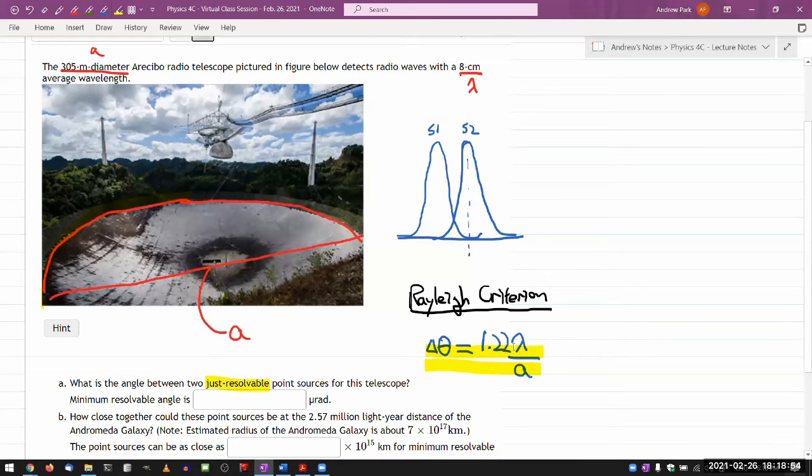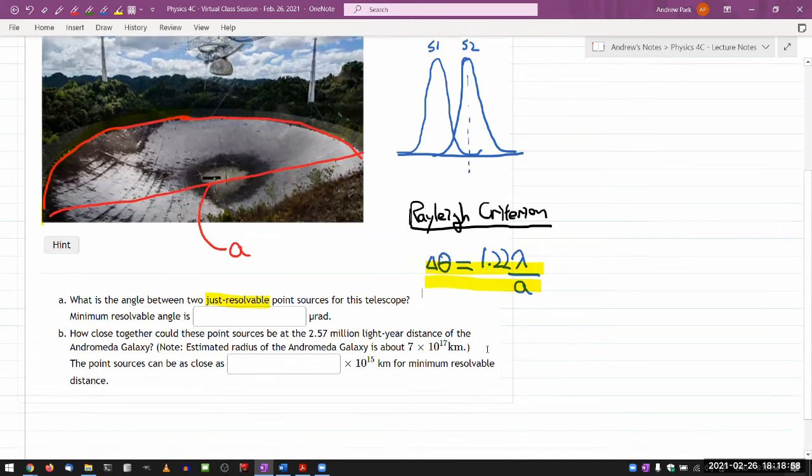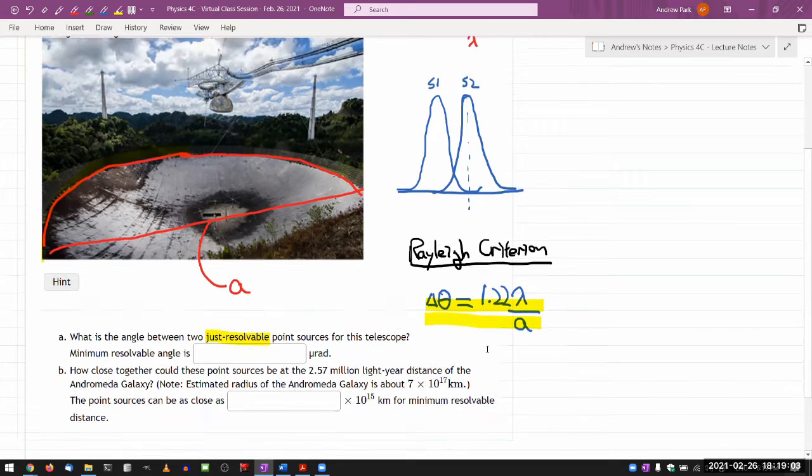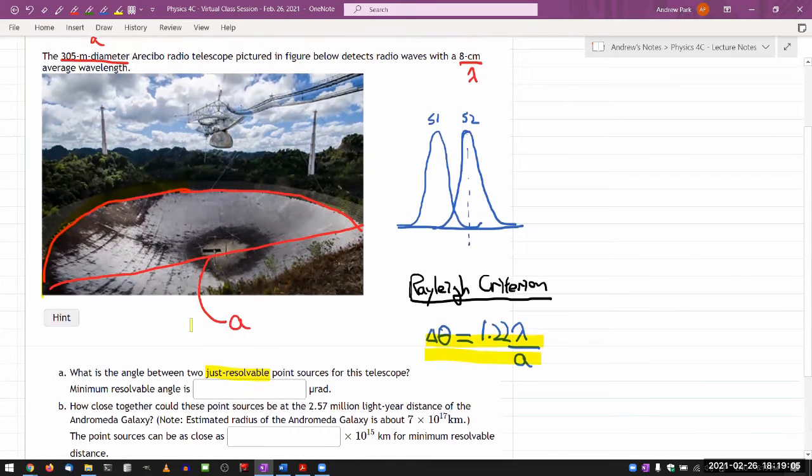At the end of the day, it's a criteria you just remember, memorize, know where to look up. So in terms of getting the answer here, the minimum resolvable angle, you are looking for answer in microradians. So really, all you have to do is work out 1.22 times the wavelength divided by the aperture. In this case, let me actually plug in the numbers.